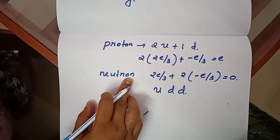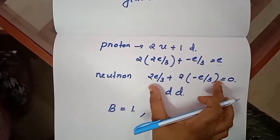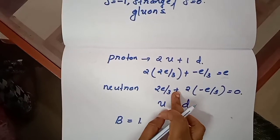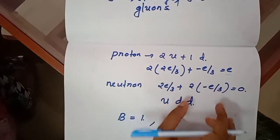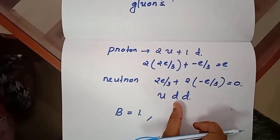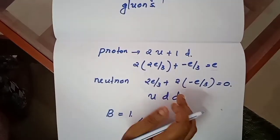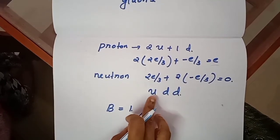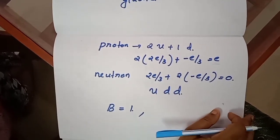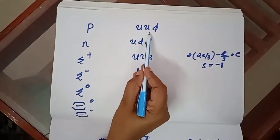Neutrons consist of one up quark and two down quarks (udd). Their total charge is: 2e/3 + 2×(−e/3) = 0. The baryon number for the neutron is also 1, since 1/3 + 1/3 + 1/3 = 1. So proton is uud and neutron is udd.